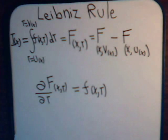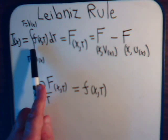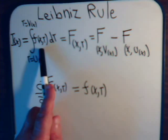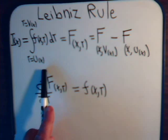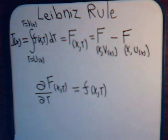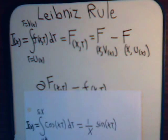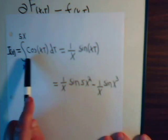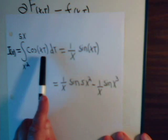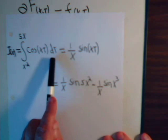We're going to consider the most general type of case where we have an integral of a function of more than one variable and the limits on the integral are not constants — rather they're some function, in this case a function of x. We can consider, for example, this kind of integral with the cosine of xt, integrating with respect to t.